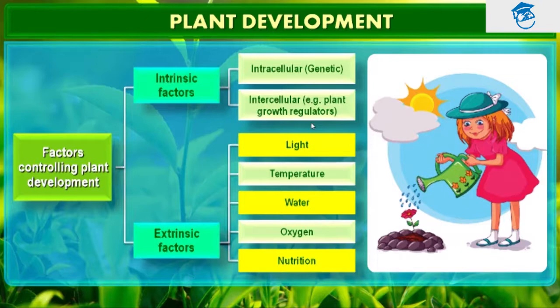The extrinsic factors include light, temperature, water, oxygen, and nutrition. These are the extrinsic factors that play a very important role in the development of a plant.